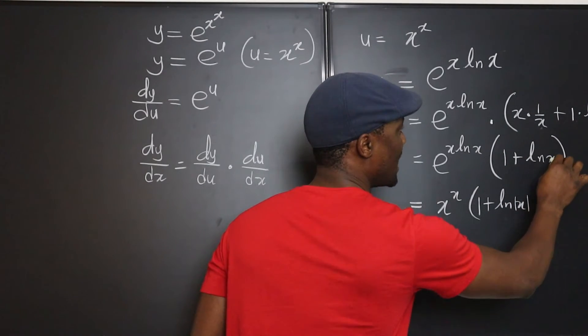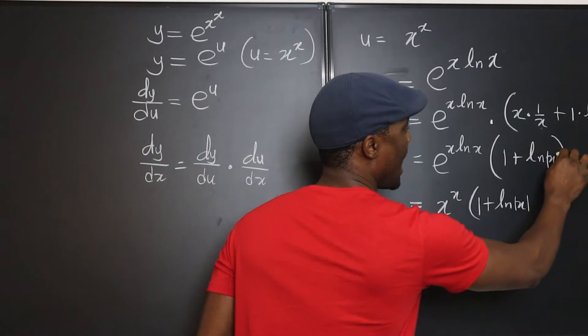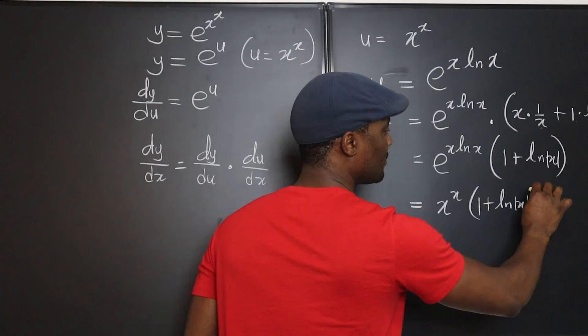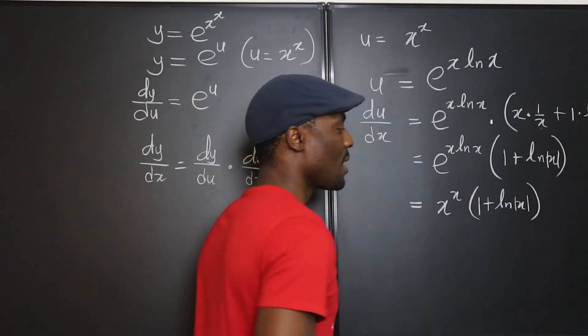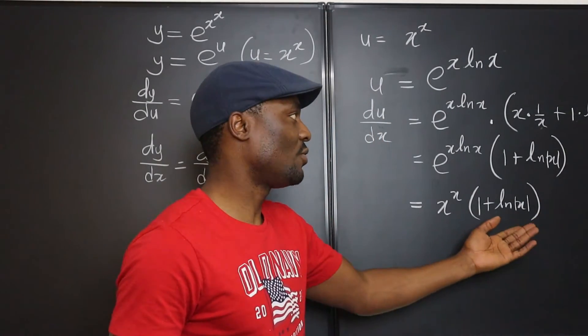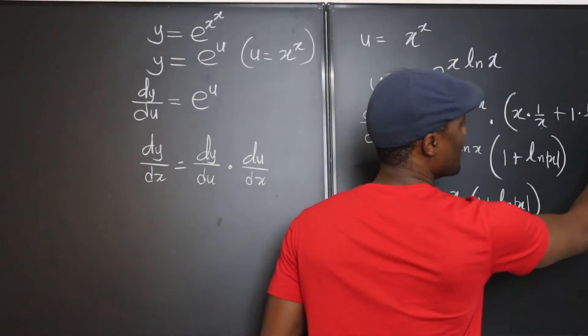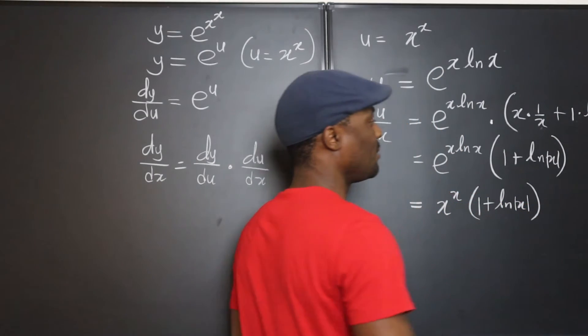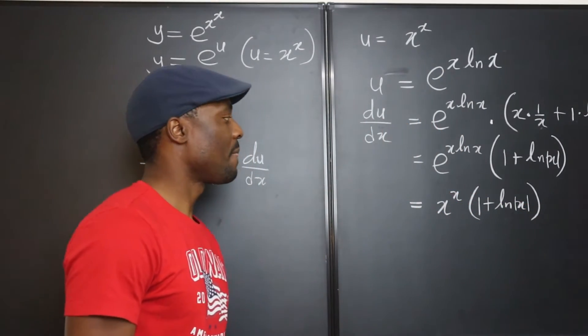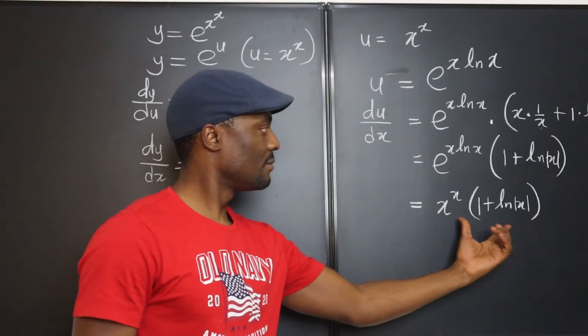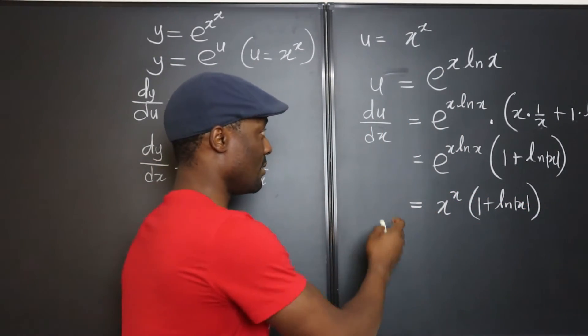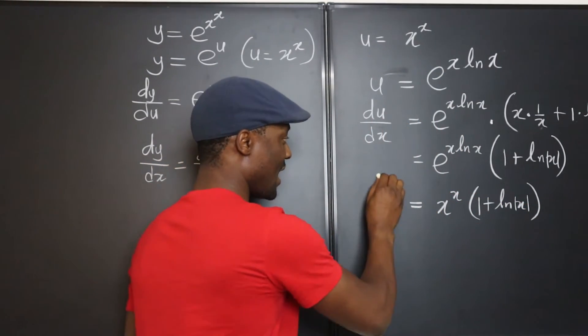So this is equal to x to the x multiplied by one plus ln of the absolute value of x, because x has to be positive. And we're done. This is du/dx.